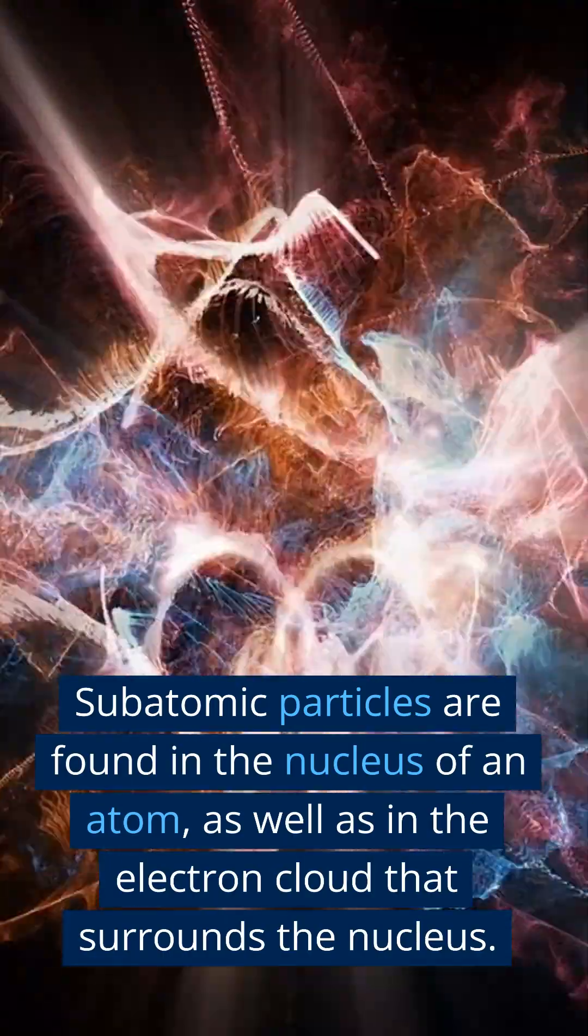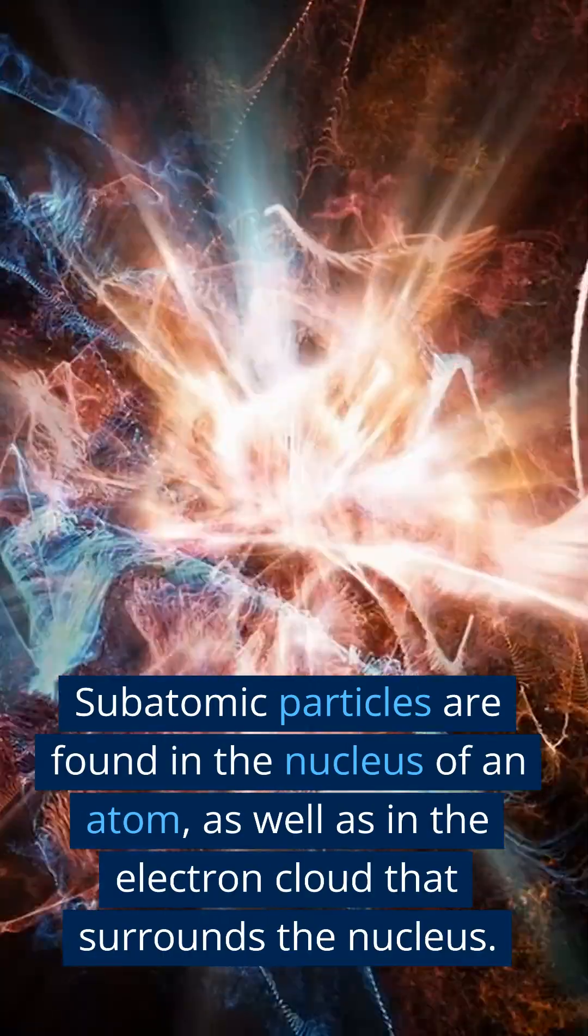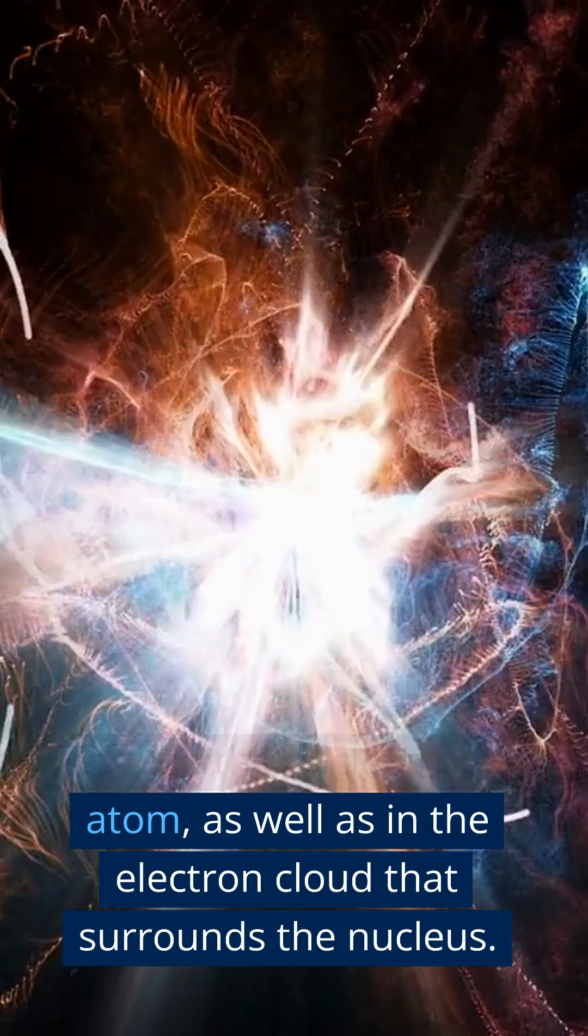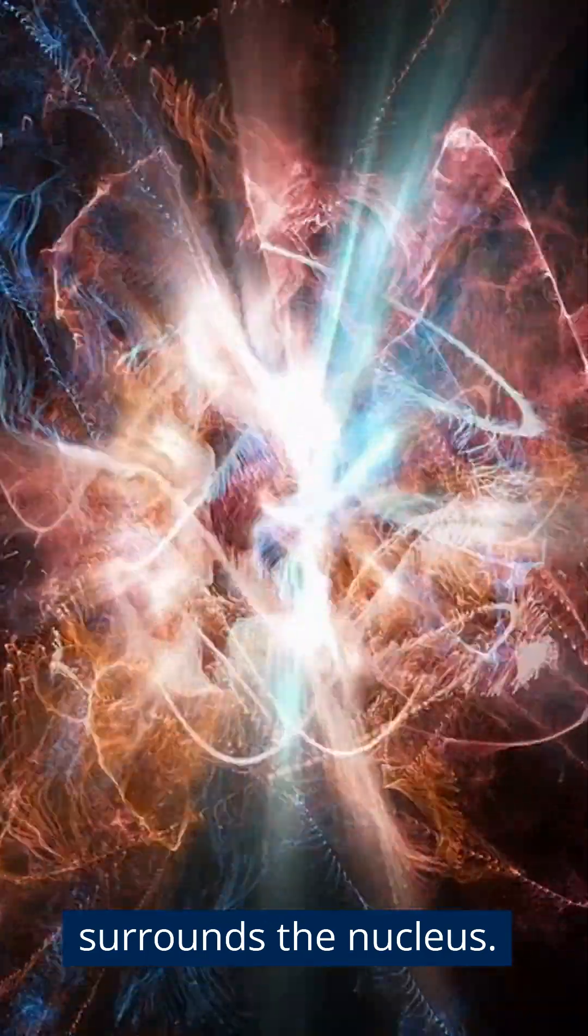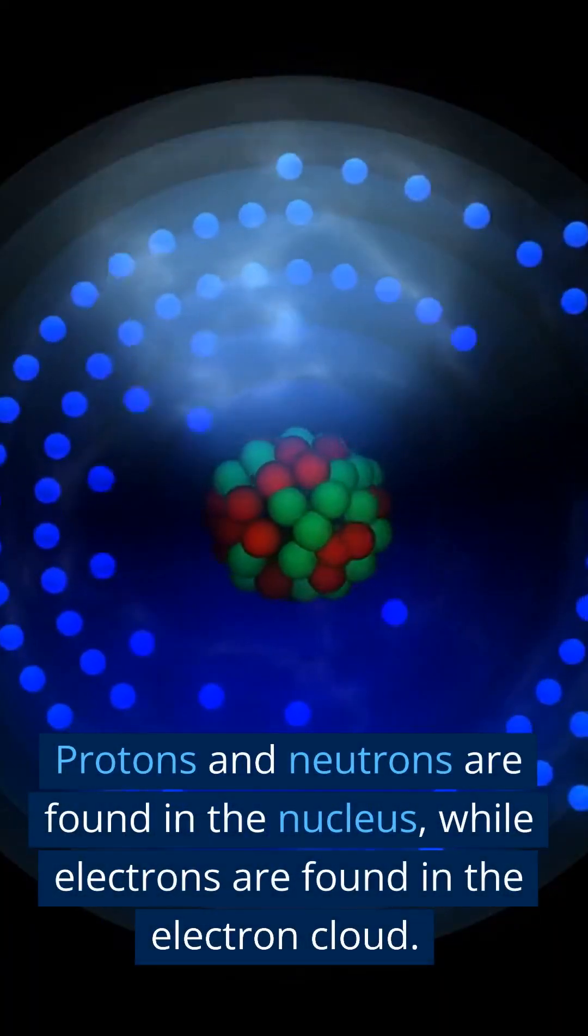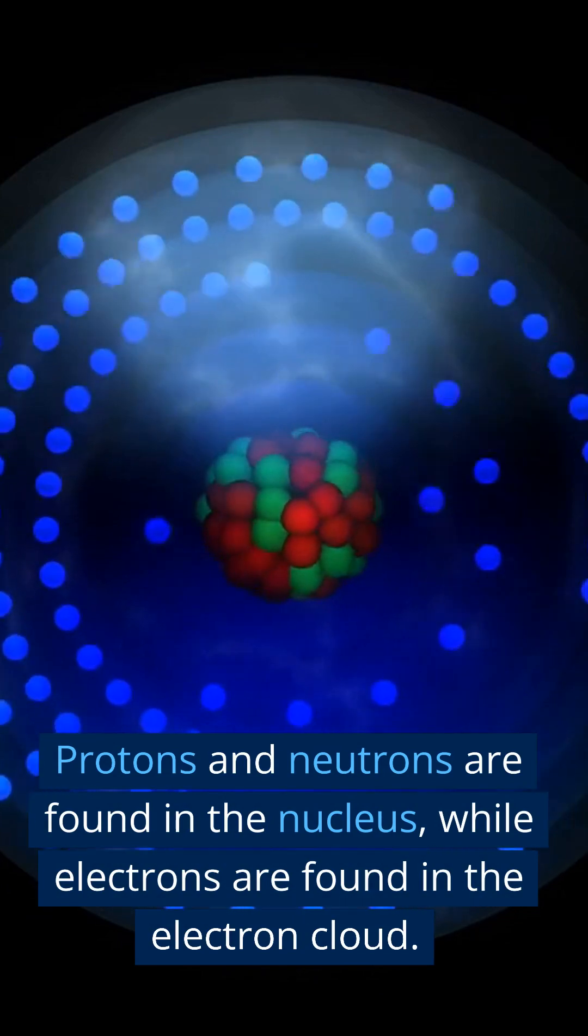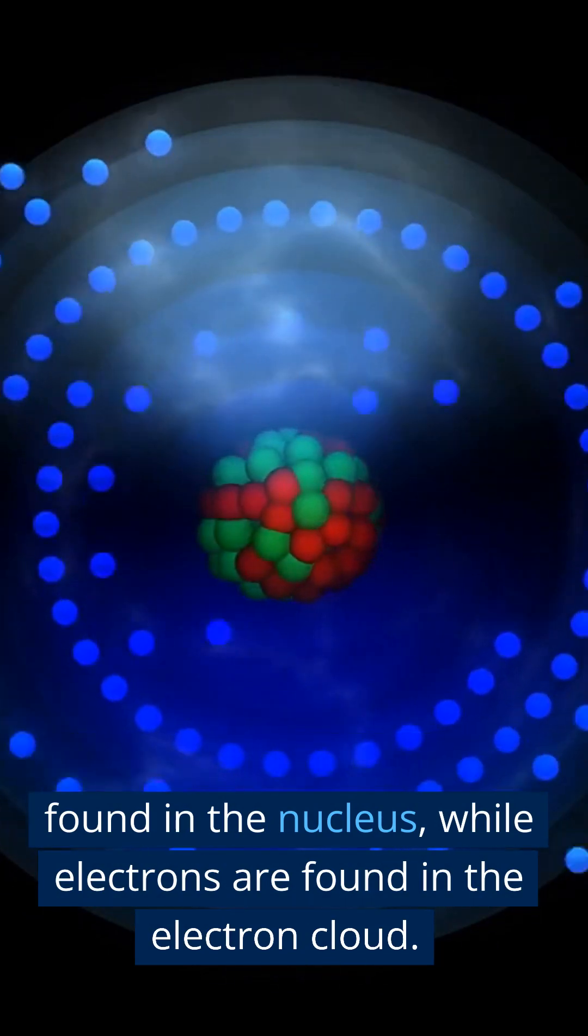Subatomic particles are found in the nucleus of an atom, as well as in the electron cloud that surrounds the nucleus. Protons and neutrons are found in the nucleus, while electrons are found in the electron cloud.